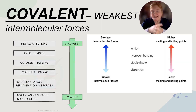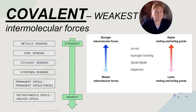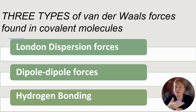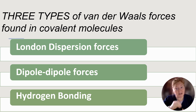Covalent has the weakest intermolecular forces. So we have metallic, then ionic, then covalent. In covalent, there are multiple types of intermolecular forces, which are often called Van der Waals forces. There are three types: London dispersion, dipole-dipole, and hydrogen bonding. Most of the time you don't have to remember the name of any of them except for hydrogen bonding, but you should be familiar with those words.